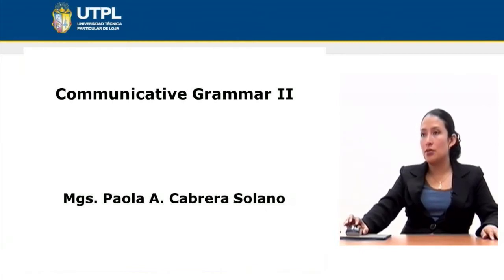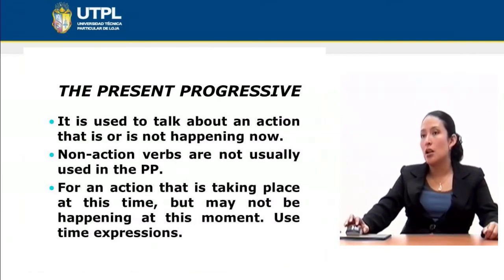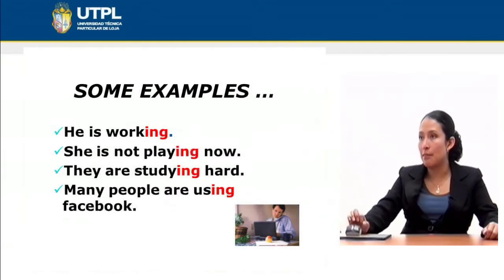In Communicative Grammar 2 we have different grammar structures, and today we are studying the present progressive. This tense is used to talk about an action that can be or not happening right now. Non-action verbs are not usually used in the present progressive, and for an action that is taking place at this time but may not be happening at this moment, we can also use the present progressive tense. We use time expressions with this tense, as we will notice in the following examples.